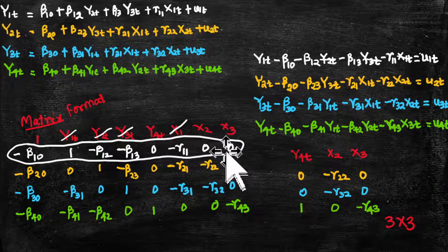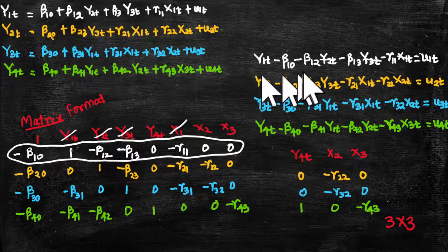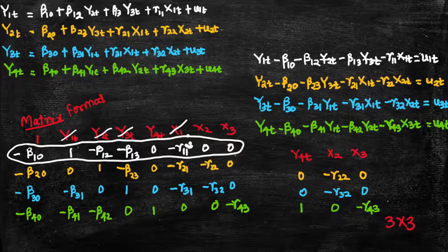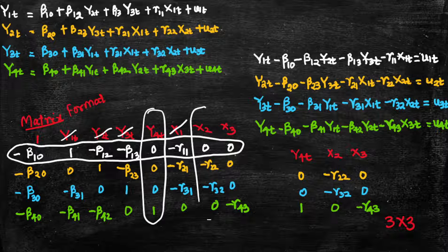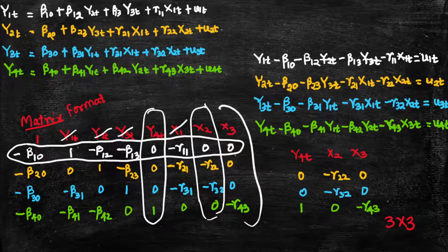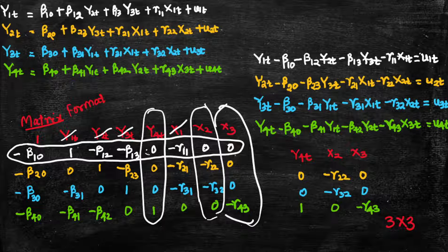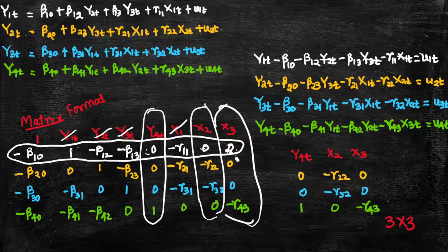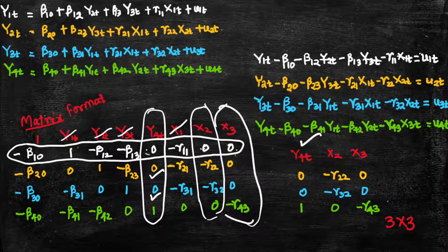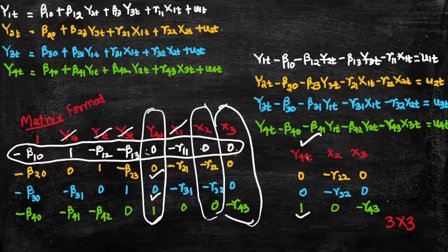We strike out y1t, y2t, y3t, x1 — the variables present in equation one — and only consider the excluded variables. From those excluded variables we construct the matrix, ignoring the intersection points for equation one's row. The excluded variable y4t gives us values zero, zero, one across the other equations.